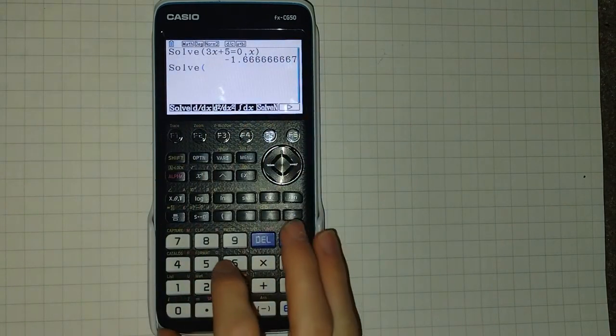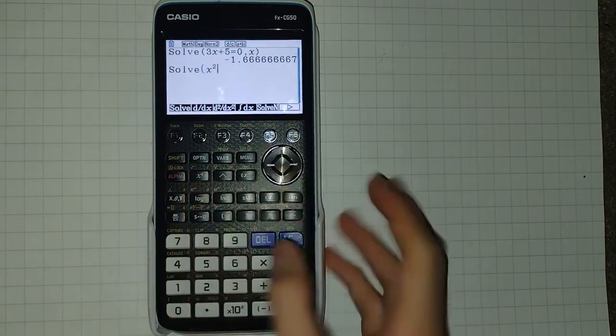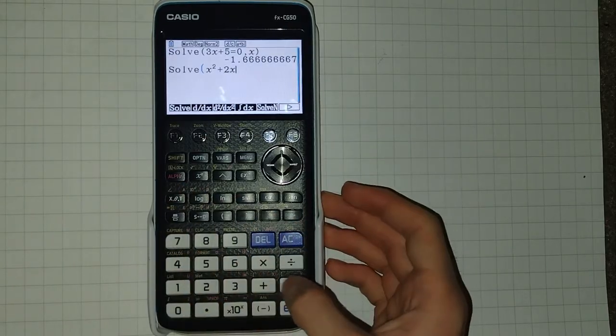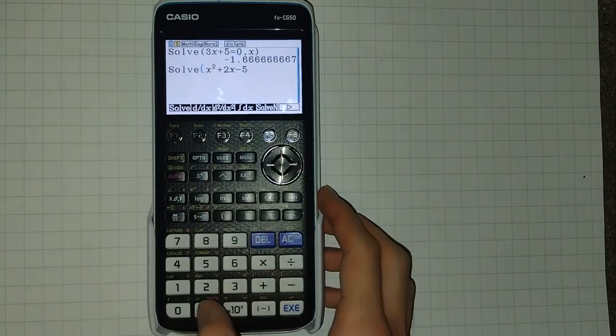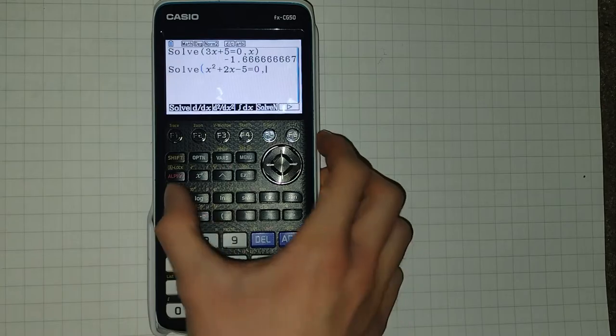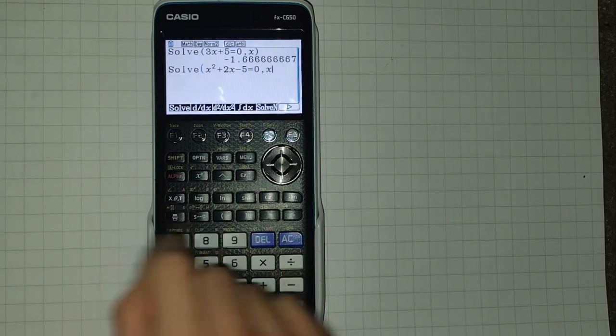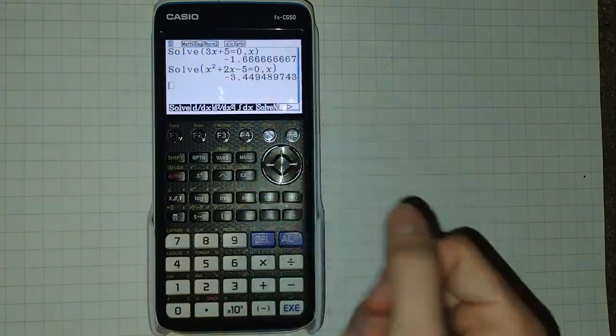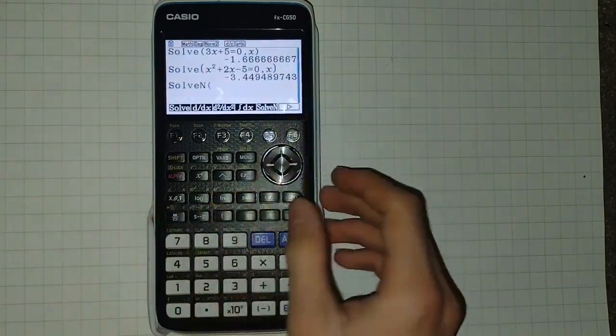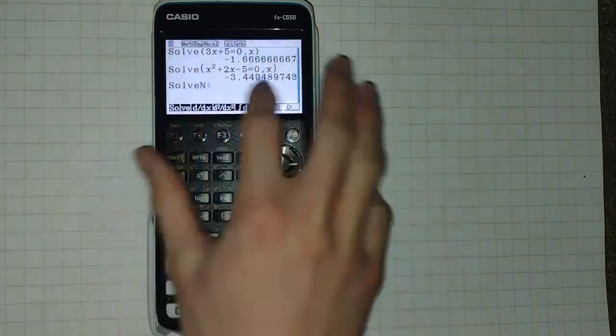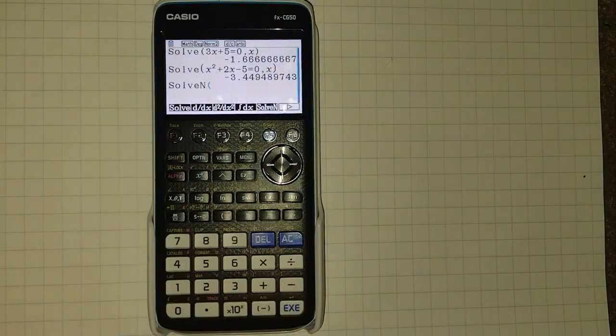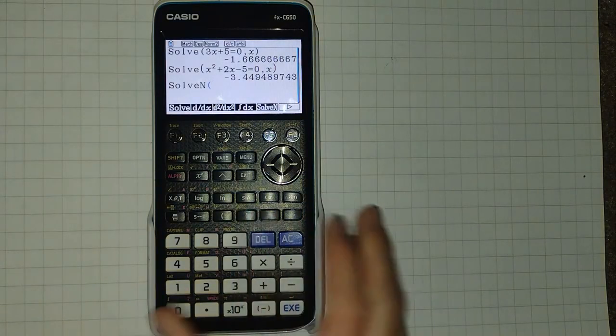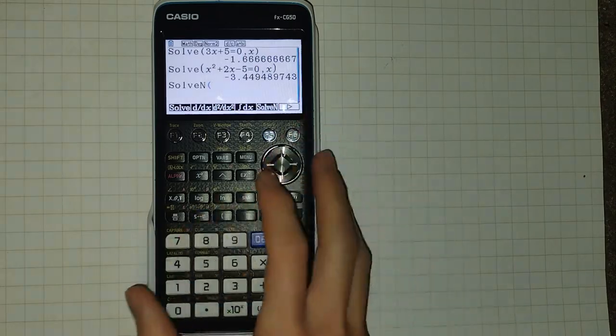But let's see what happens when we enter a quadratic. x squared plus 2x subtract 5 equals zero, solve for x. By the way, x is this key here. We only get one solution, but what if we want the others? Quadratics should always have two solutions. They may not always be real, but two solutions.